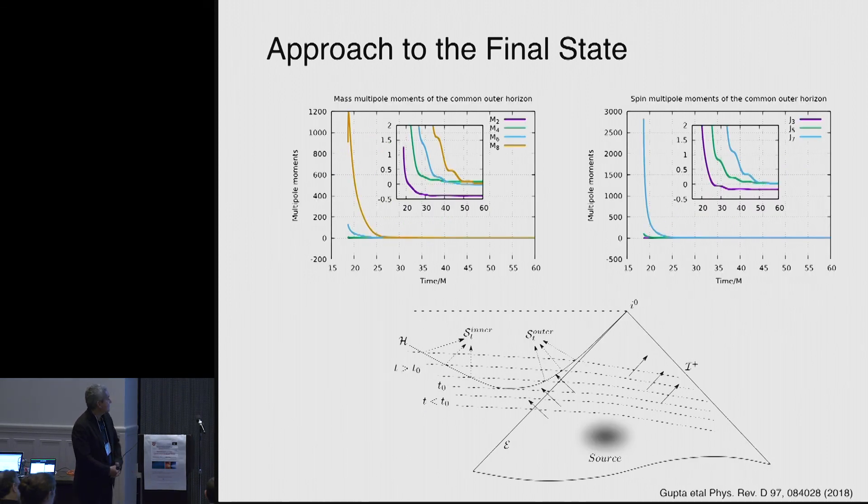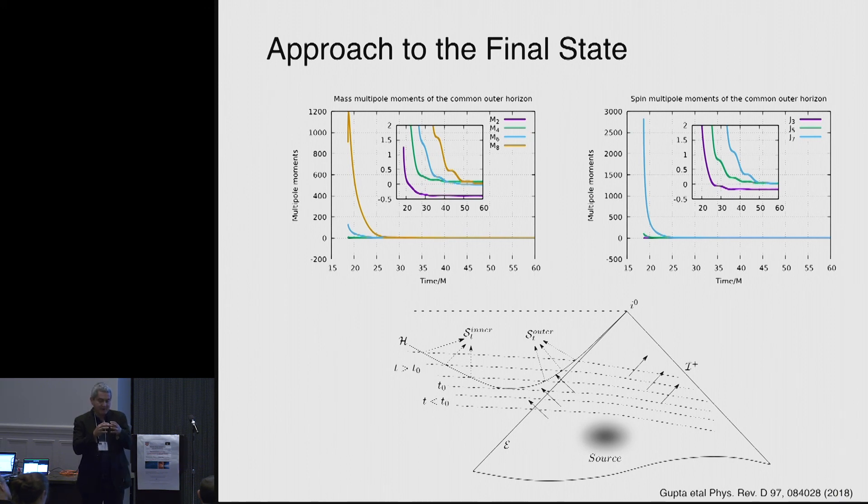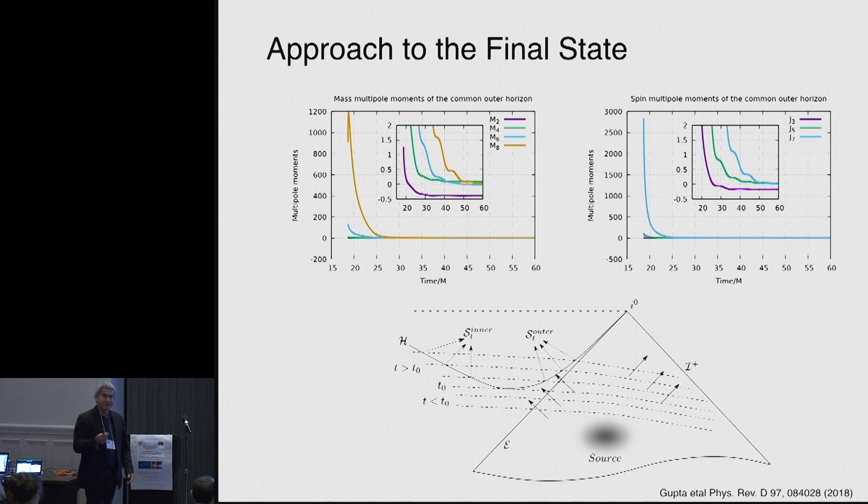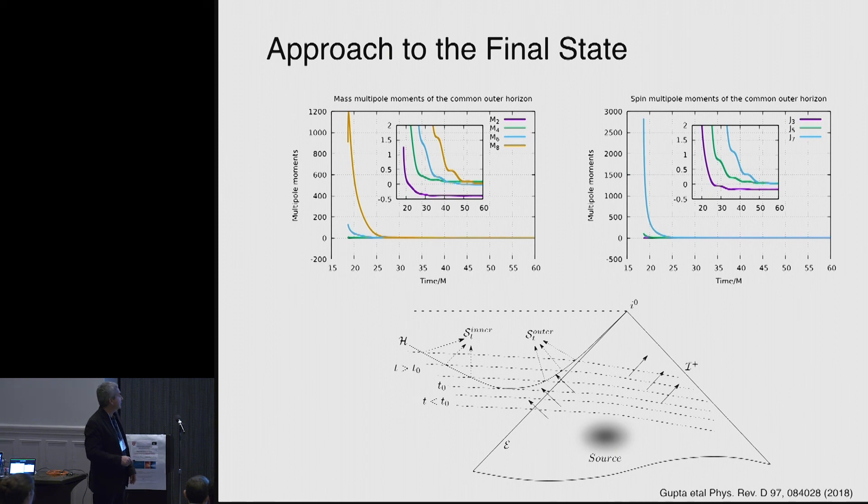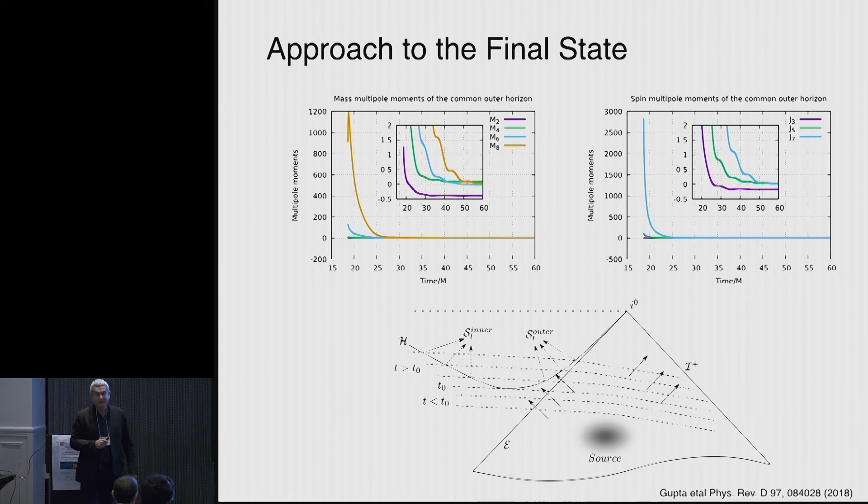And also that the phase, the way that it enters quasinormal ringing is a little bit earlier than the amplitude. Now my last remark is that by connecting the source multipoles, that is the way that the black hole horizon is settling to the Kerr black hole to the gravitational waves, we're going to learn about how we enter the final state. So this is work by Schneider and collaborators in which they calculated the multipoles of the apparent horizon and they are correlating that with the gravitational wave that is emitted outside.